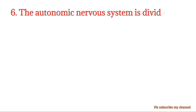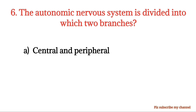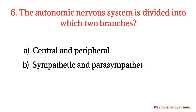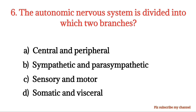MCQ number 6. The autonomic nervous system is divided into which two branches? Option A: Central and peripheral. Option B: Sympathetic and parasympathetic. Option C: Sensory and motor. Option D: Somatic and visceral. The right option is Option B.